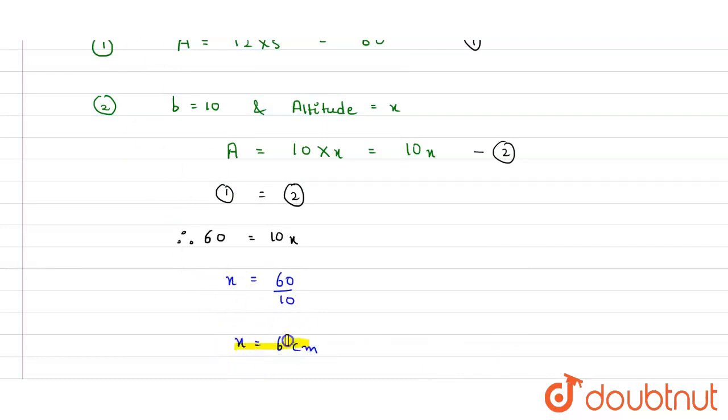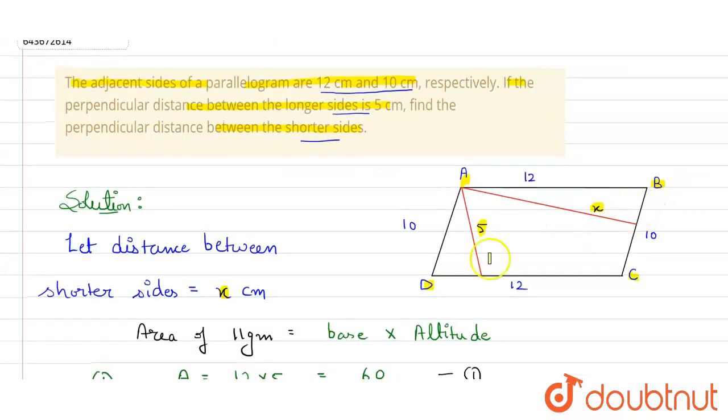And what was x? x was the shortest distance between the shorter sides, it is 6 centimeters here. Thank you.